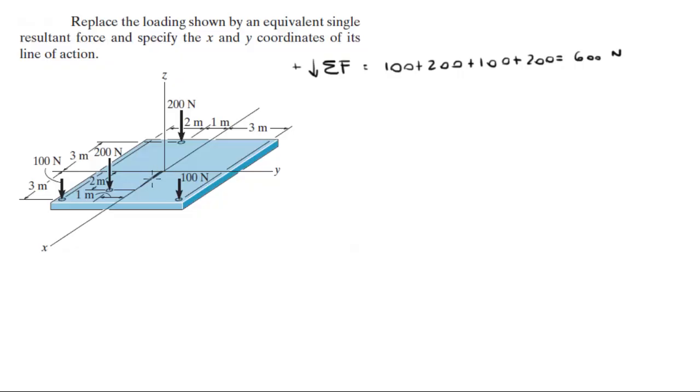Now, the moment creating on this plate about the x-axis, let's assume going clockwise is positive. Sum of the moments in the x is equal to the 100 on the left times 3, this distance, so 3 times 100 plus 200 times 1, which is this 200 right here times this distance of 1, plus 200 times 1, minus 100 times 3, which comes out for a total moment of 400 newton meters going counterclockwise.